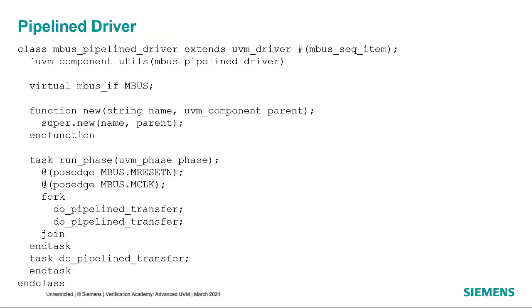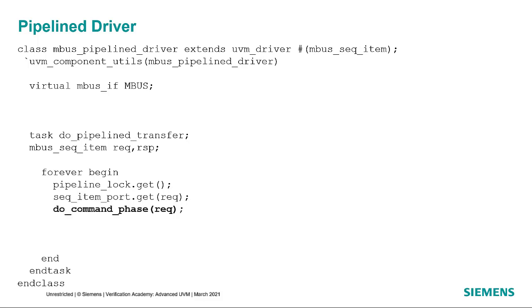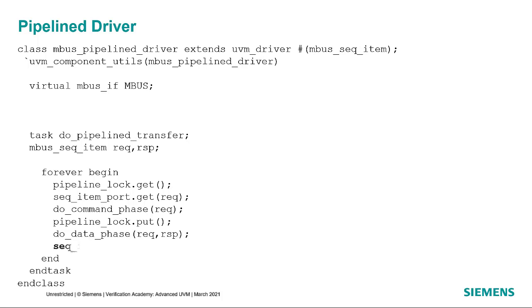To support pipelining, a driver must be able to process a new sequence item before the previous one has completed. This usually involves calling a task multiple times inside a fork-join block, where the number of task calls matches the pipeline stages. Inside that task you'll have a loop — if you use a forever loop, make sure you have another way of terminating the task so your sequence doesn't hang. We use a semaphore to ensure only one instance accesses the driver at a time. We call seqItemPort.get to get the sequence item — note we're not using getNextItem here as get gives more control. We do the command phase of the transaction, then release the semaphore so the next thread can do its command phase. Then we execute the data phase, which returns a response object, and then call seqItemPort.put to send the response back to the sequence.